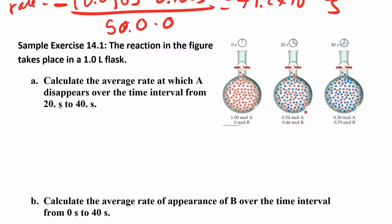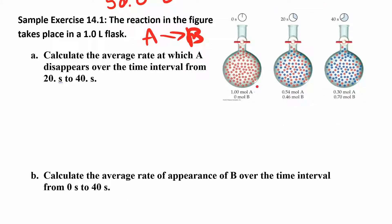Let's try another example. We have the reaction A turning into B. We start off with 1 molar of A — that's 1 mole of A in 1 liter. We have no B to start. Then 20 seconds later, we have 0.54 moles of A and 0.46 moles of B. Then at 40 seconds, 0.30 moles of A and 0.70 moles of B. Notice that A plus B always equals 1, because this is a one-to-one reaction.